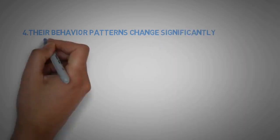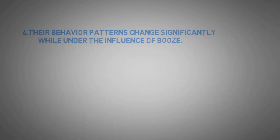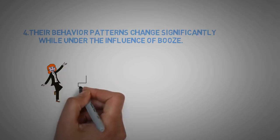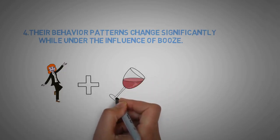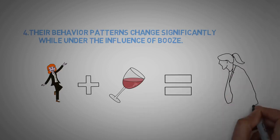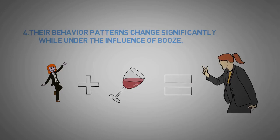4. Their behavior patterns change significantly while under the influence of booze. Alcoholics may change significantly when they drink. For instance, a typically mild-mannered person may become aggressive or make impulsive decisions.